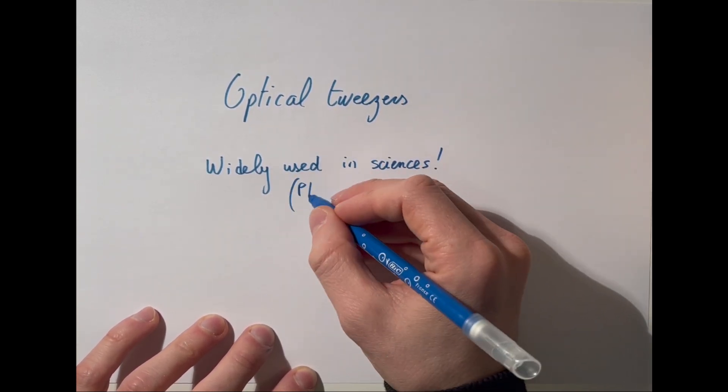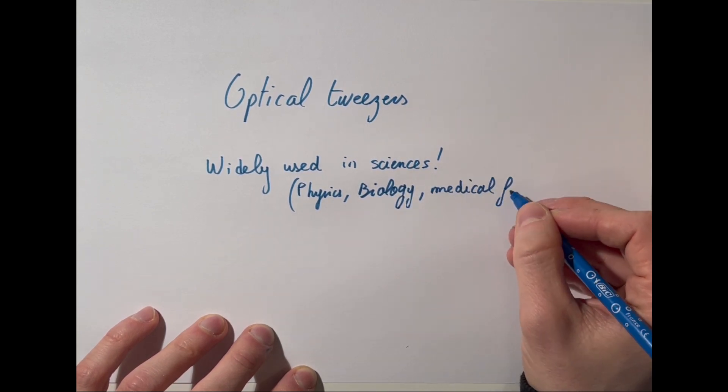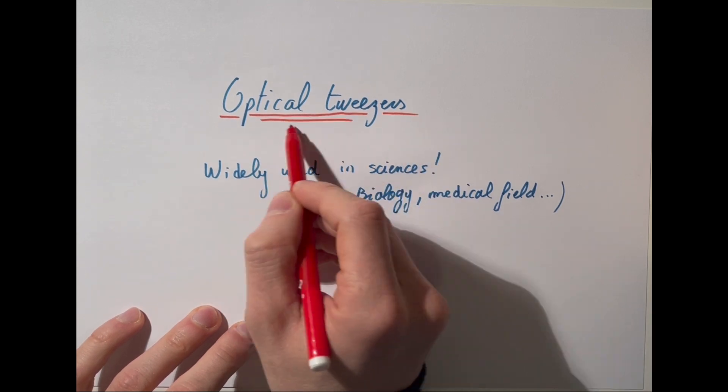Optical tweezers can be used to manipulate microscopic objects, such as cells or individual molecules, using light. This video explains how they work and their main implications.